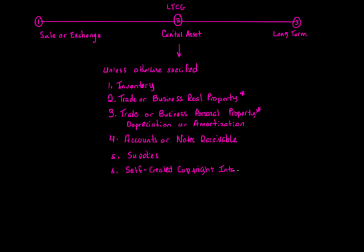Copyrights usually deal with literary, music, or artistic compositions, letters, memorandums, or similar items — not scientific items, more artistic and literary compositions, music, novels, books. You don't have to have a formal copyright registered, but usually if you have something of value in one of these categories, you do get a copyright. The code lays out these groupings: literary, music, or artistic composition; a letter or memorandum; and anything similar to the above.